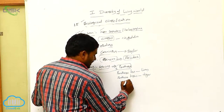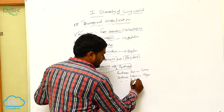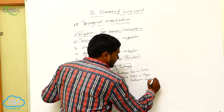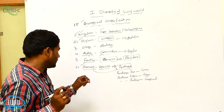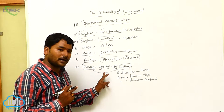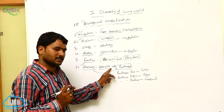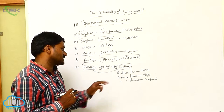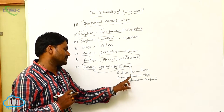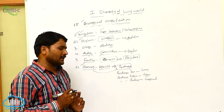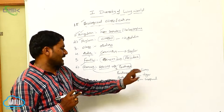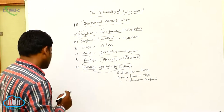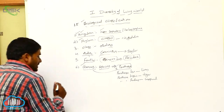Next is Panthera pardus, which is the scientific name of the leopard. So, genus is a group of different closely related species. Panthera is a genus — it has Panthera leo (lion), Panthera tigris (tiger), and Panthera pardus (leopard). That is about the genus.